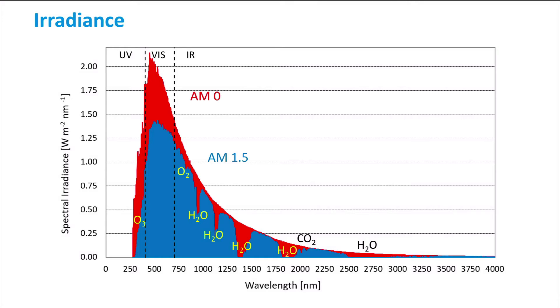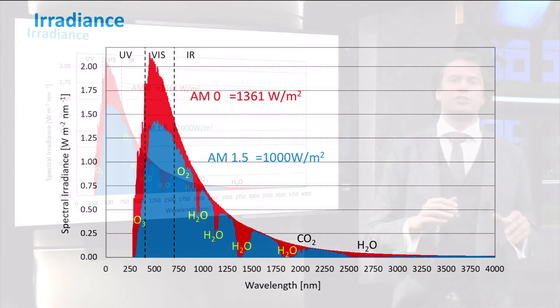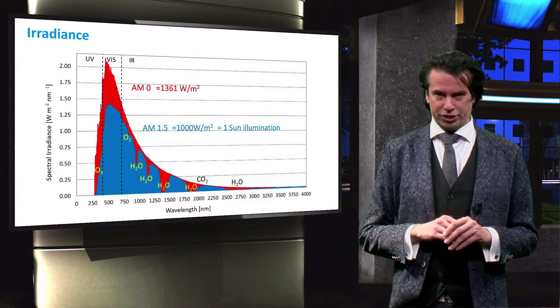The absorption in the atmosphere causes the total irradiance to decrease from 1361 watts per square meter in the AM0 spectrum to approximately 1000 watts per square meter in the AM1.5 spectrum. The latter is known as one-sun illumination.